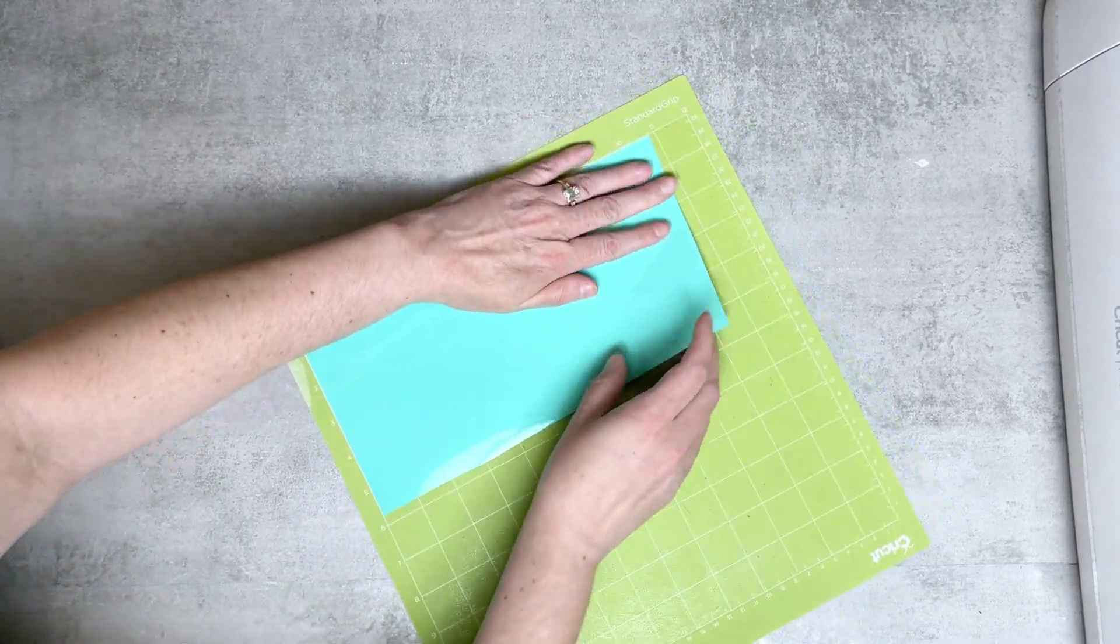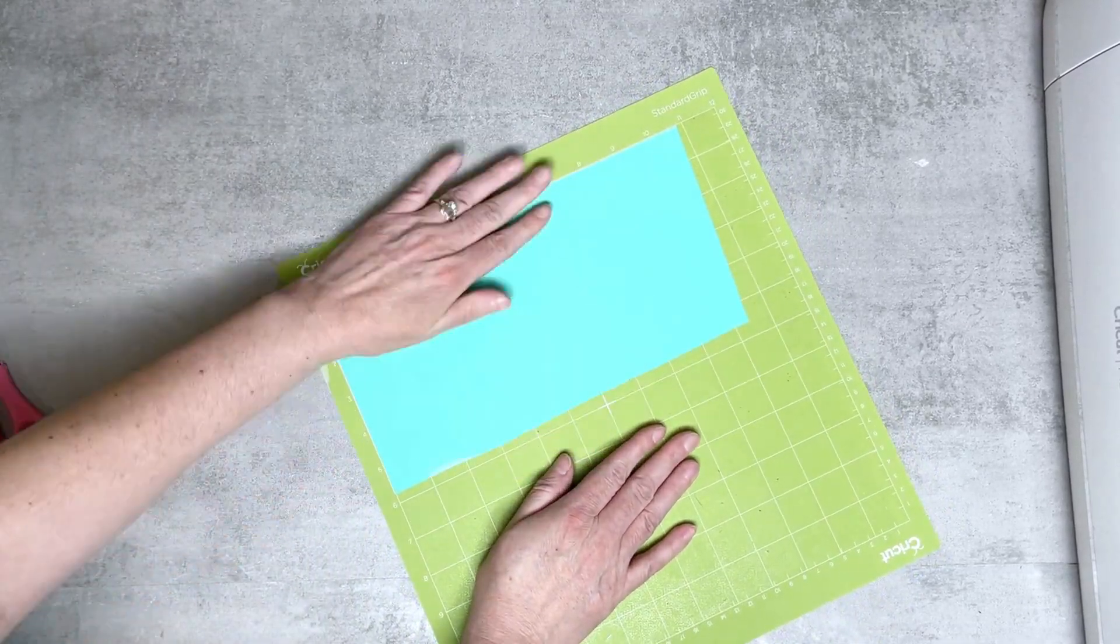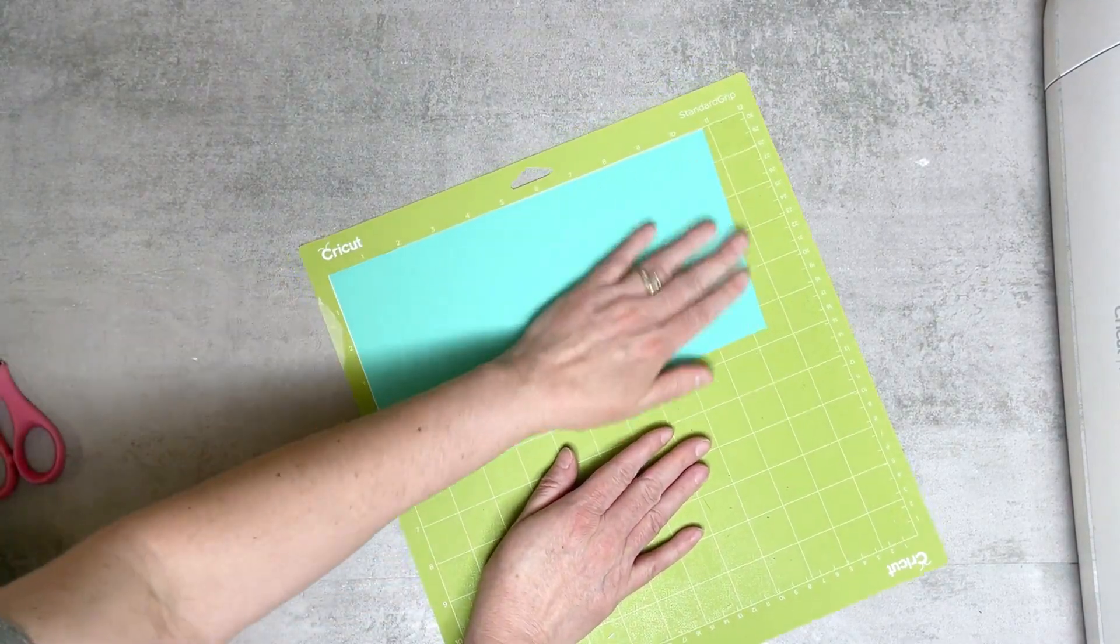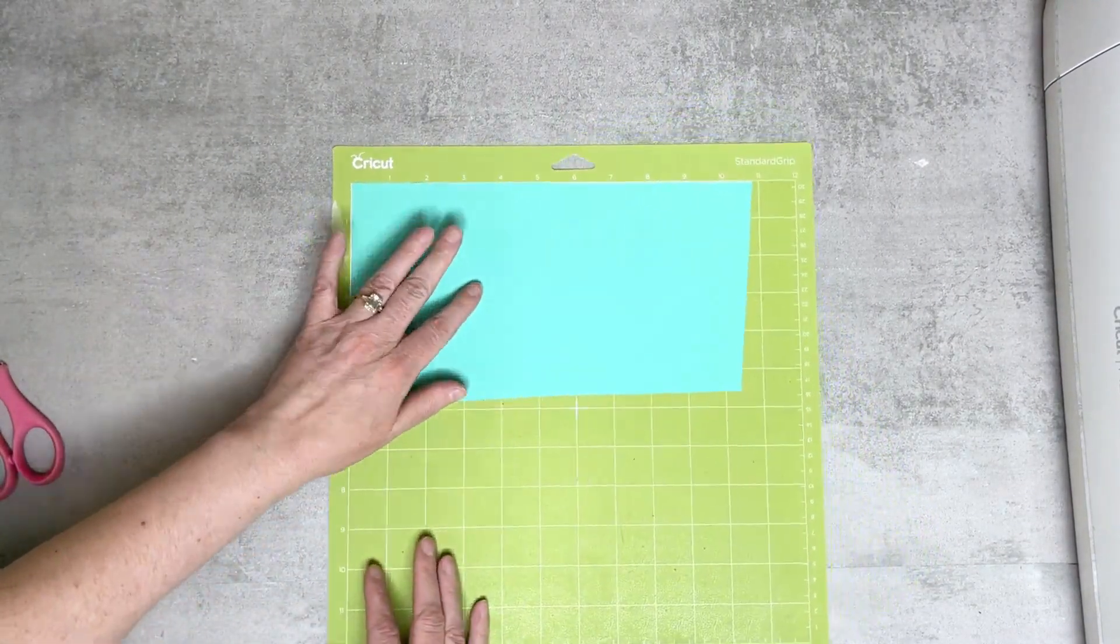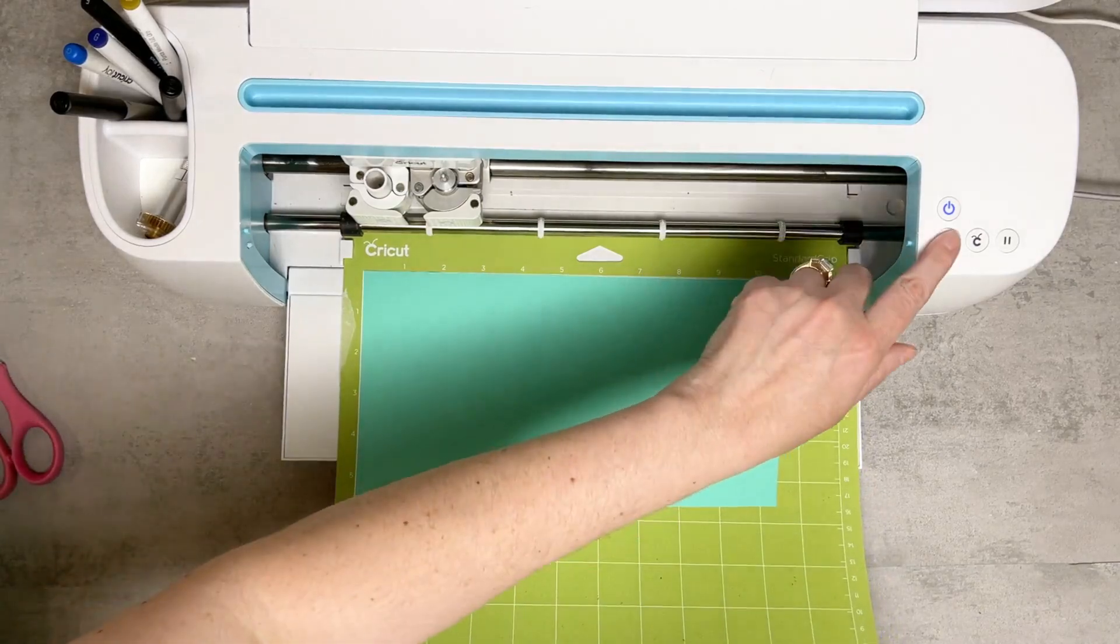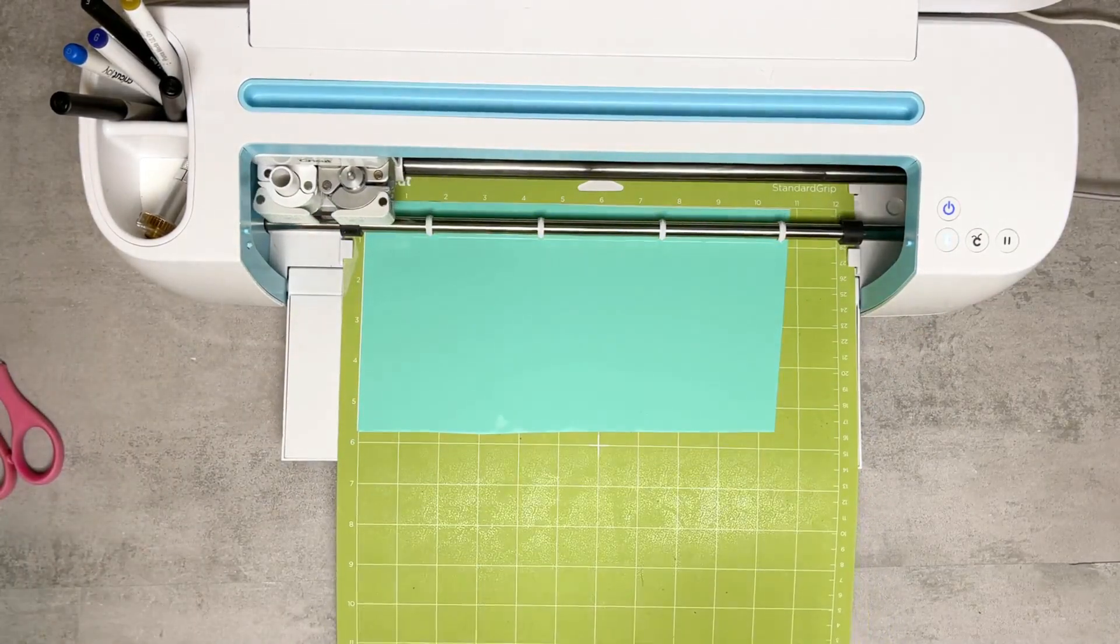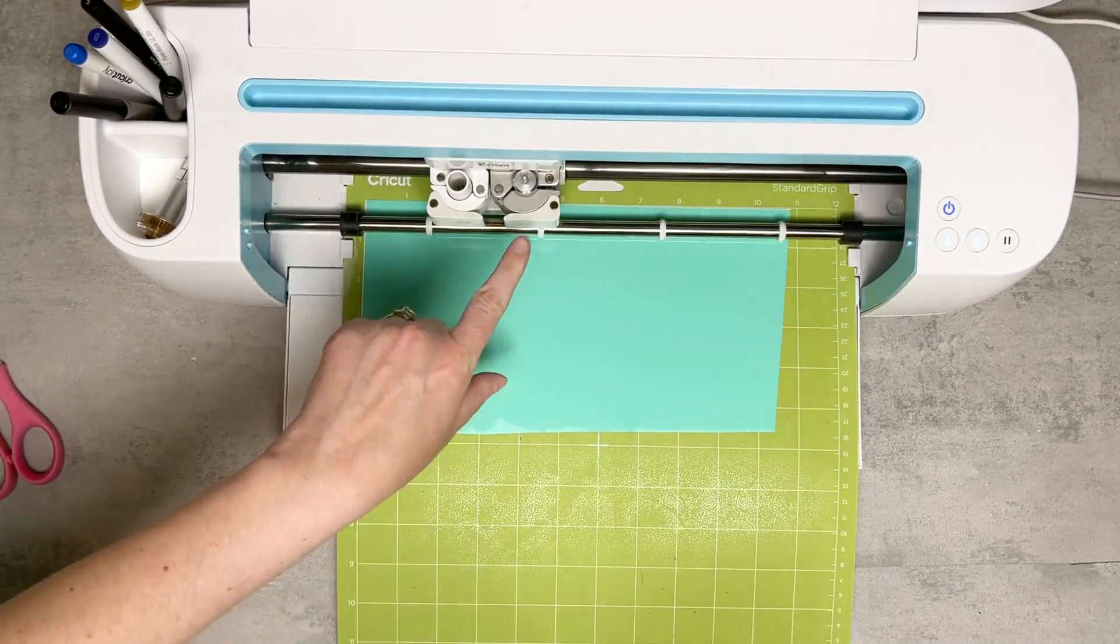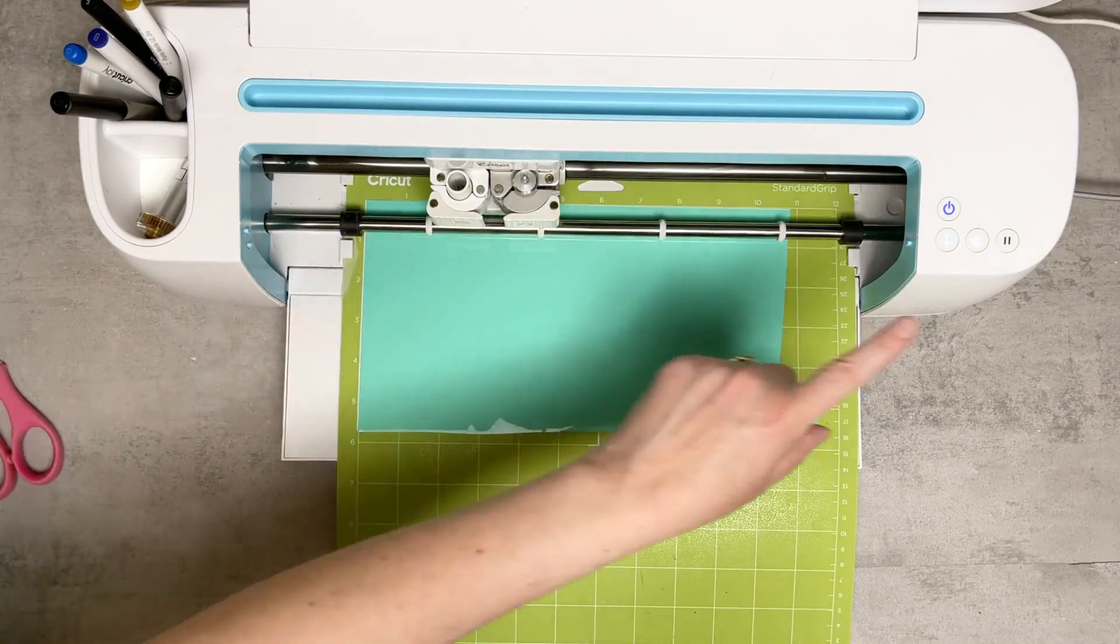I like to apply it in one direction facing down and just press it so that way there's no major air bubbles. Now we're ready to load it into our machine. We're using the standard fine point blade and now we can get started.